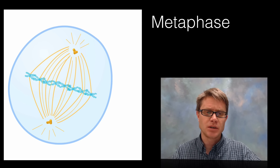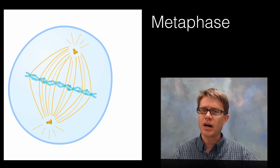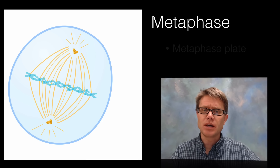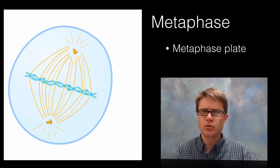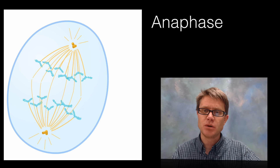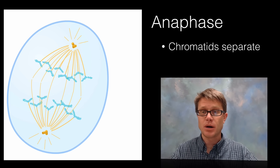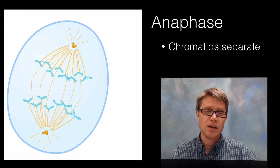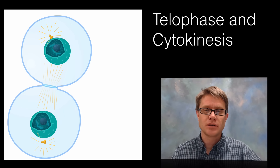During metaphase, all the chromosomes have lined up in the middle — I remember it as 'meat in the middle.' They all line up along what's called the metaphase plate, one of the straightest lines in all of nature. Then moving into anaphase, the chromatids are moving apart — I think of the A standing for 'apart.' The chromatids separate and we get equal amounts of DNA in each daughter cell.